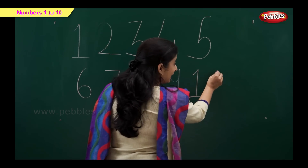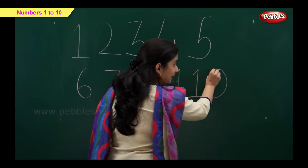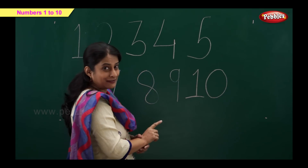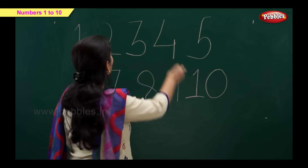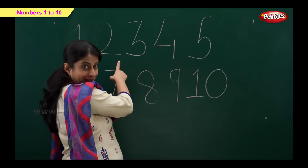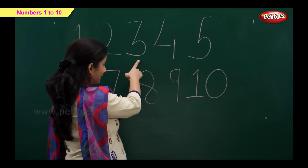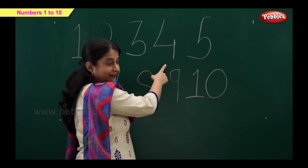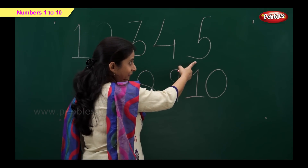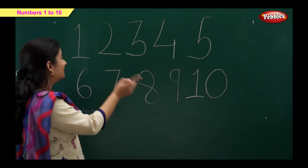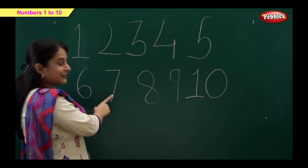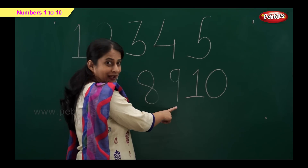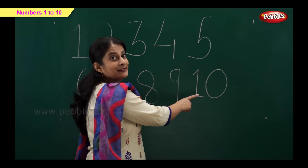Number 10 comes with 1 and 0. Now let's repeat: 1, 2, 3, 4, 5, 6, 7, 8, 9, 10. Very good.